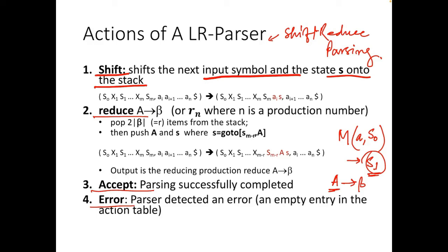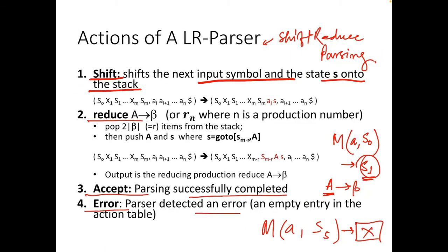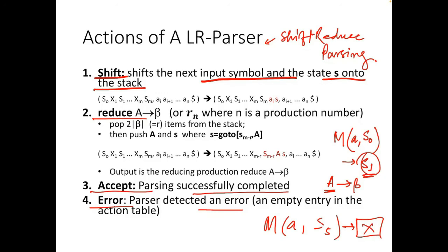Accept means parsing has successfully completed. Error means the parser detected an error — for example, when searching for a match in state S5 and the table cell is empty, the parser determines it is an error condition. These are the four actions of the LR parser.